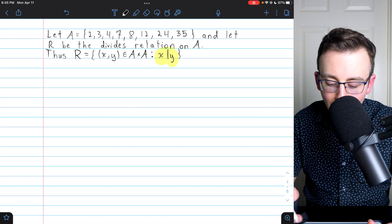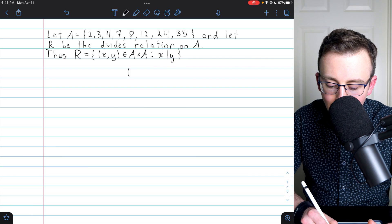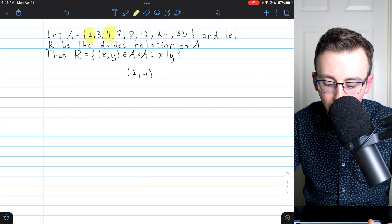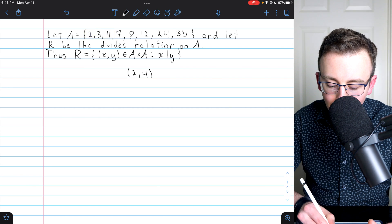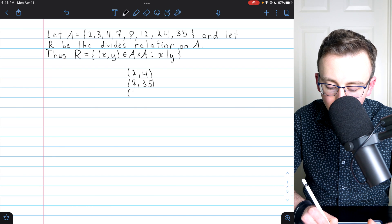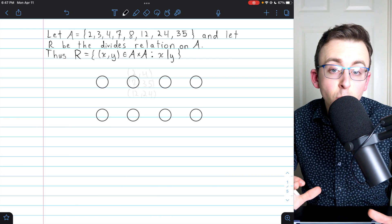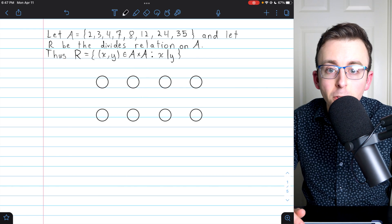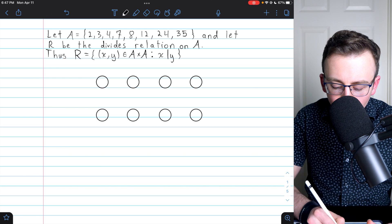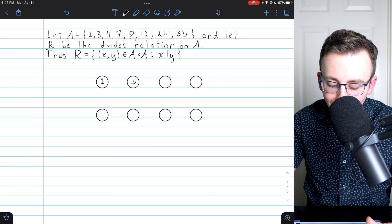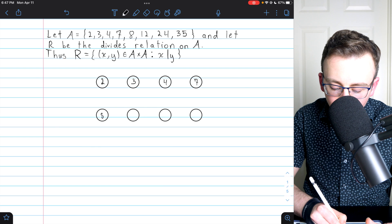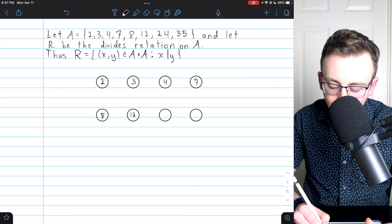Some of the ordered pairs that might be in this relation would be (2,4), because 2 and 4 are both in A, and 2 divides 4. Other elements that might be in the relation: 7 and 35, or 12 and 24. To represent this partially ordered set or poset in a diagram, let's do something really simple. We'll just make a circle for every element in the set A. So here I've got 8 circles, and inside I will put the different elements of the set.